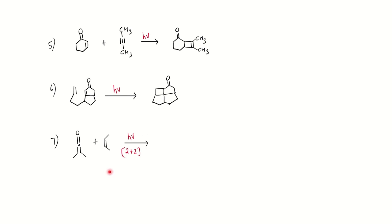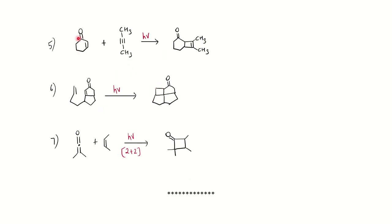Ketene is another important substrate that undergoes photochemical reaction with alkenes. Under photochemical condition you can show the 2+2 cycloaddition reaction with respect to the carbon-carbon bond and design the product. I hope you have worked through many examples for the 2+2 cycloaddition reaction for different kinds of substrates, and can now solve any problems in this category. Also refer to previous year question papers for more practice.